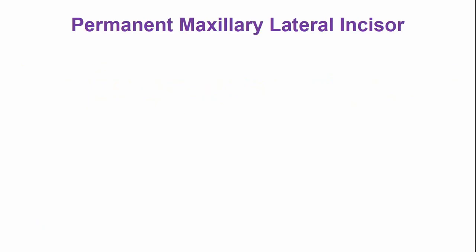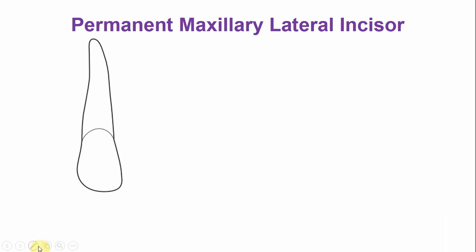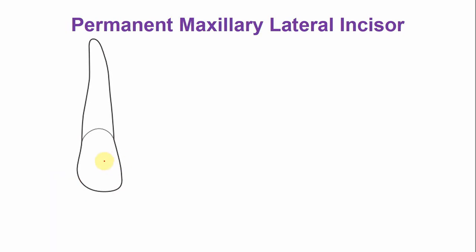First we will discuss the endodontic anatomy in a mesiodistal section. This is the outline of a maxillary lateral incisor in a mesiodistal section. The tooth has two pulp points. The outline of the pulp chamber is similar to that of the maxillary central incisor.